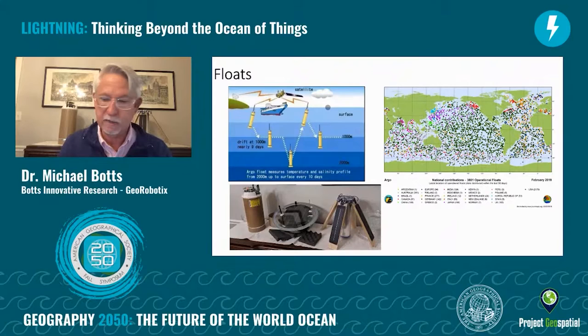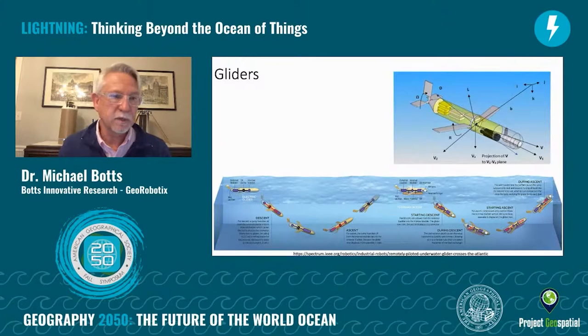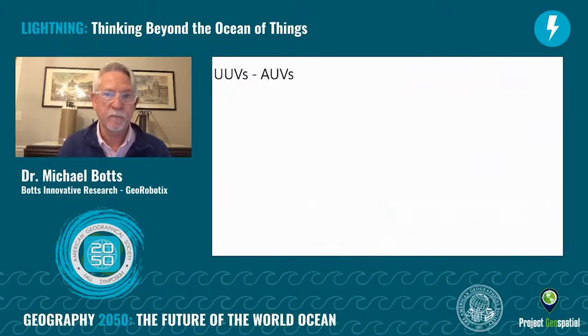And then came floats which were able to communicate through satellite systems to report their measurements, resulting in a more densely sampled ocean than we had previously had. As we build more inexpensive floats and deploy them into the ocean, that will increase even more. There are also gliders that get set on a path and as they go along that path, they descend and ascend in the ocean to provide measurements that are depth dependent.